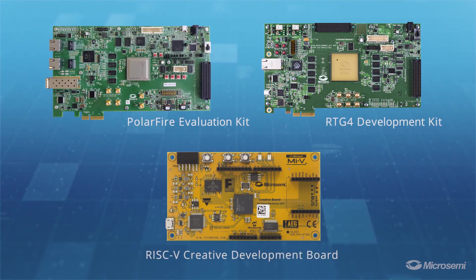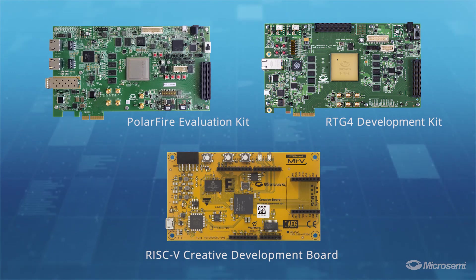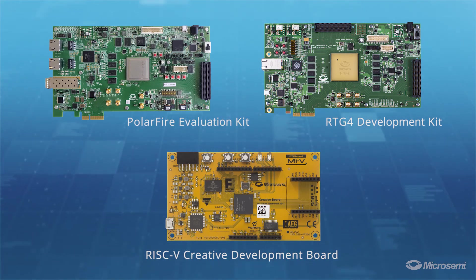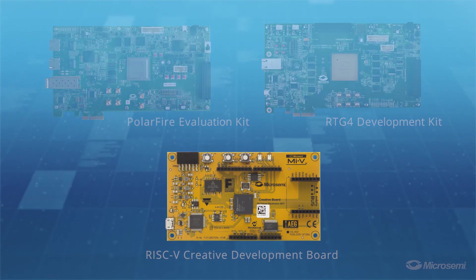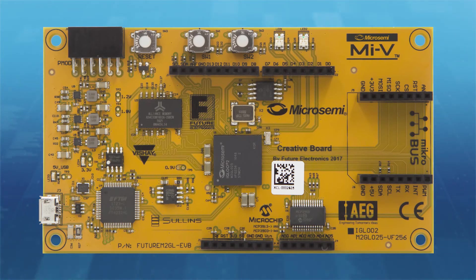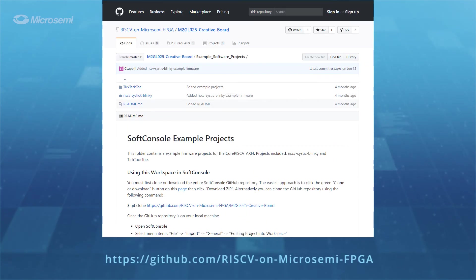Boards. We have numerous evaluation boards which have RISC-V cores running in a design. These boards vary in terms of capabilities, but you can get started with the Future Electronics RISC-V Creative Board which is only $99.95. This board comes pre-loaded with a RISC-V core running a simple Hello World demo. To see all the available boards, please visit the MicroSemi GitHub site.